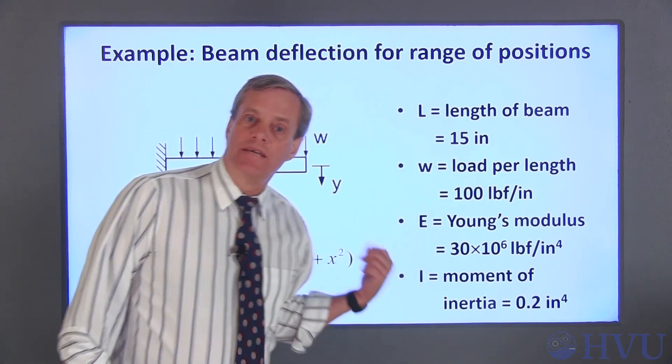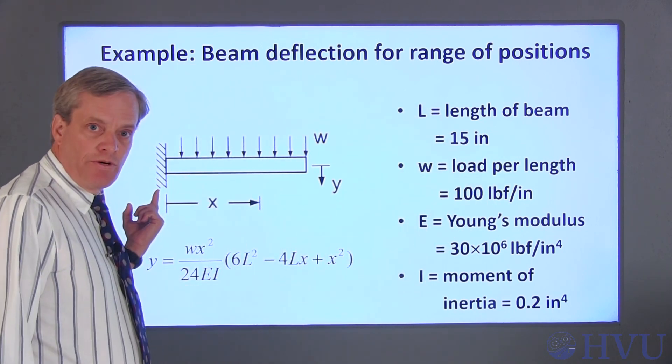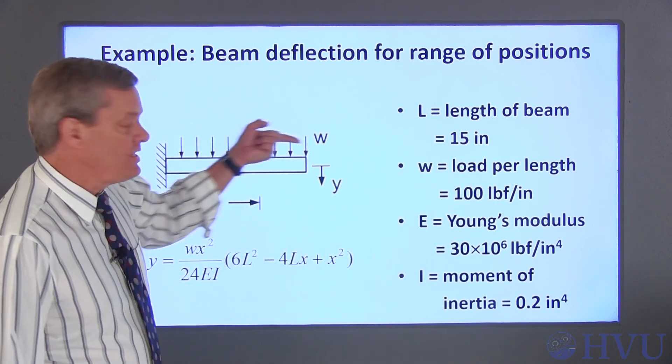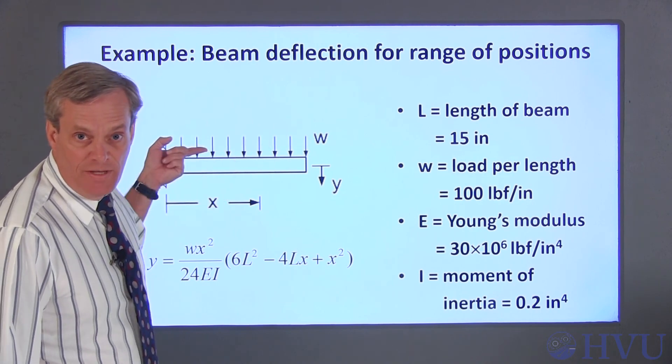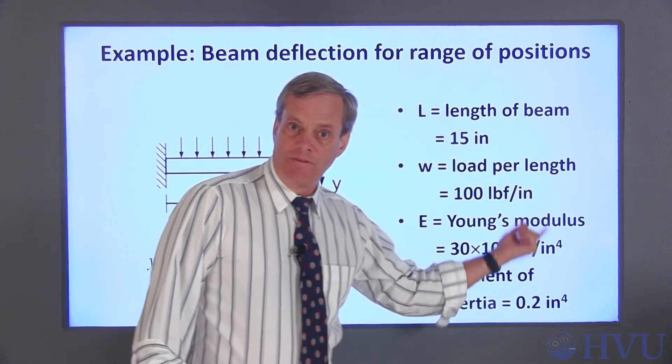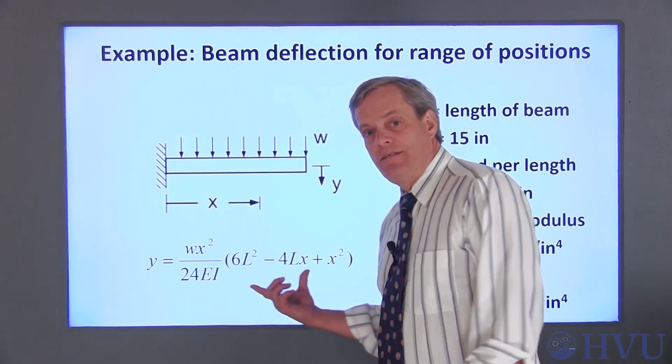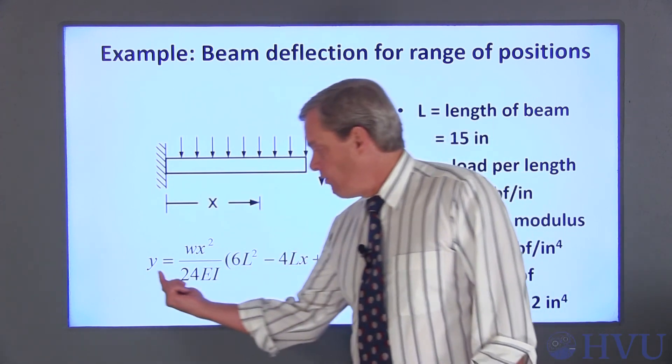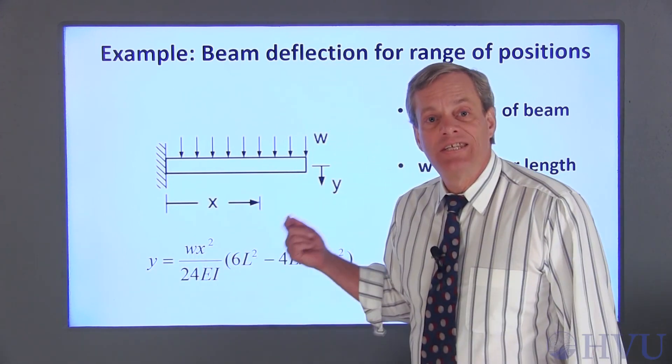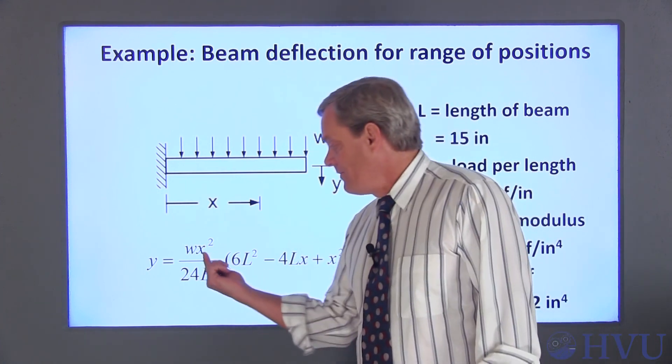Here's the problem statement again. The beam is rigidly supported at the left end, and the load is evenly distributed along the length of the beam. These are the physical parameters of the beam, and this is the equation governing the beam displacement, Y, as a function of the distance from the fixed end of the beam, X.